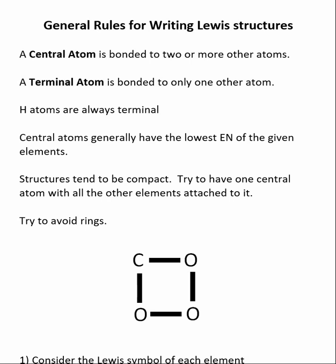When writing Lewis structures, it's very important to determine what the central atom is. If no other information is given, typically the central atom is the one with the lowest electronegativity. Remember electronegativity increases as we go up and to the right of the periodic table. So the atom inside of the molecular formula that is furthest to the left and down probably will be the central atom. It doesn't always have to be like that, but when there's no other information given, it's a good place to start.